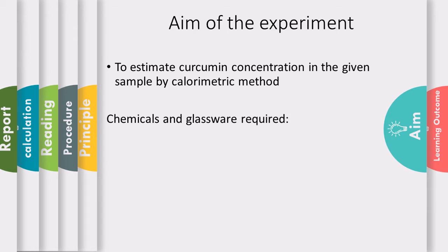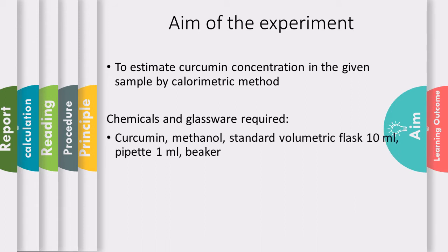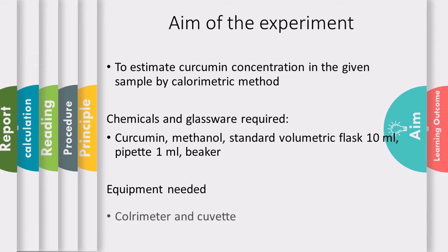The chemicals and glassware required are curcumin, methanol, standard volumetric flask 10 ml, pipette 1 ml, and beaker. Coming to the equipment, we need a colorimeter and cuvette.